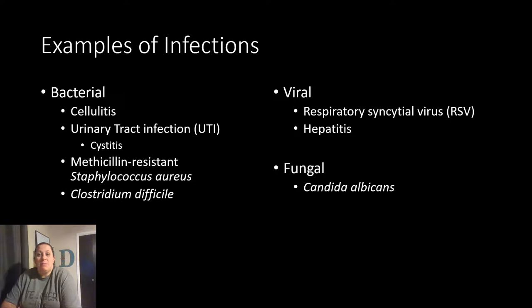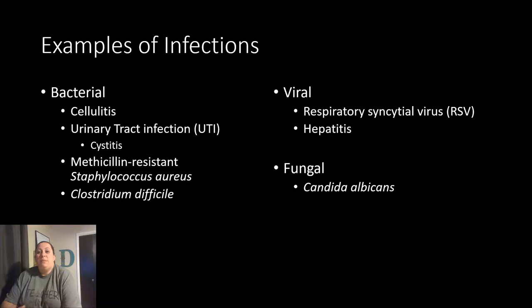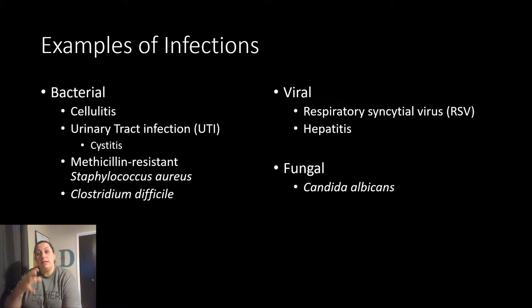Hepatitis is another viral infection — 'itis' means inflammation and 'hepat' refers to the liver. It causes inflammation of the liver, which can become damaged leading to cirrhosis. There are several forms: hepatitis A, B, C, and E. Hepatitis B has a vaccine that most kids receive today; hepatitis C is associated with sharing needles or tattooing and can cause major cirrhosis. Hepatitis A is often associated with food poisoning. Different variants respond differently to certain medications and treatments.